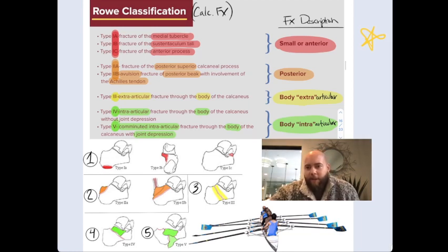So the way I remember this is that 1s are small, 2s are posterior, 3 is body, and 4 is intra-articular. Those are the more extensive fractures. And I use these pictures here to kind of burn into my memory to help me memorize that. Some may not be able to do that.